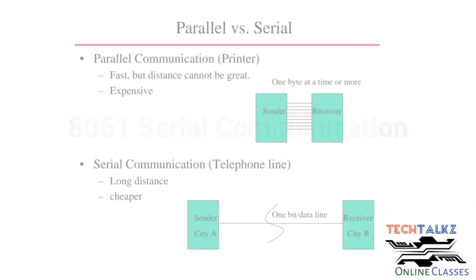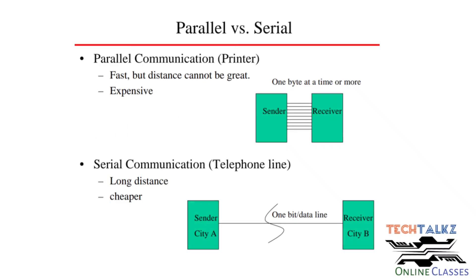Communication can be parallel or serial. If we are transferring one byte, 8 dedicated lines are used in parallel — that means 8 bits pass at the same time. This is fast but expensive.